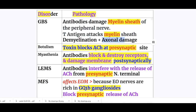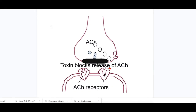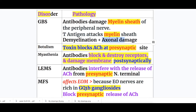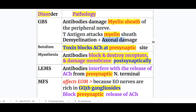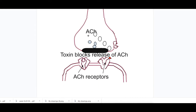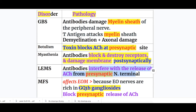In Botulism, the toxin blocks acetylcholine release at the presynaptic terminal. In Myasthenia gravis, antibodies block and destroy the post-synaptic receptors and damage the membrane. In LEMS, antibodies interfere with the release of acetylcholine from the presynaptic nerve terminal. In Miller-Fisher syndrome, GQ1B ganglioside antibodies also block presynaptic release of acetylcholine.